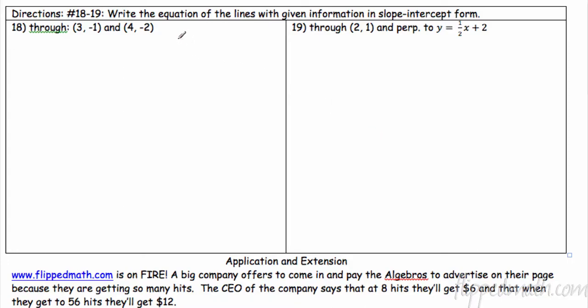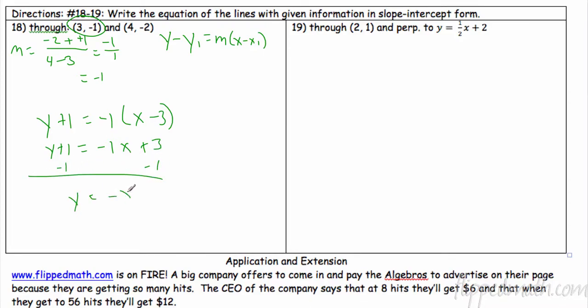Remember that new form, slope intercept form, or excuse me, point-slope form: y minus y1 equals m times x minus x1. So the first thing we need is a slope. So negative 2 minus negative 1, the same thing as negative 2 plus 1, and 4 minus 3. So that's negative 1 over 1. So our slope is negative 1. So plug in. I'm going to use this point. y minus negative 1 is the same thing as y plus 1, and then my slope's negative 1 times x minus 3. I got to distribute, so I have y plus 1 equals negative 1x plus 3. Subtract 1, so y equals negative x plus 2.